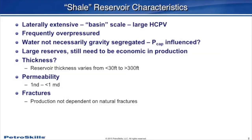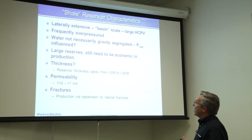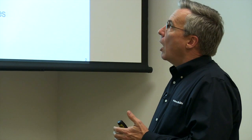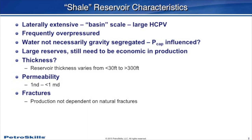Let's talk about shale reservoir characteristics first. The lateral extent of these deposits is massive, oftentimes covering hundreds or several hundreds of square miles. So they're on a basin scale rather than the much smaller scale we have in conventional reservoirs. Many of these are over-pressured but not always. Water in our shales is not gravity segregated like it is in conventional reservoirs — we don't have down-dip water like we do in conventionals. Very large reserves are associated with these wells.